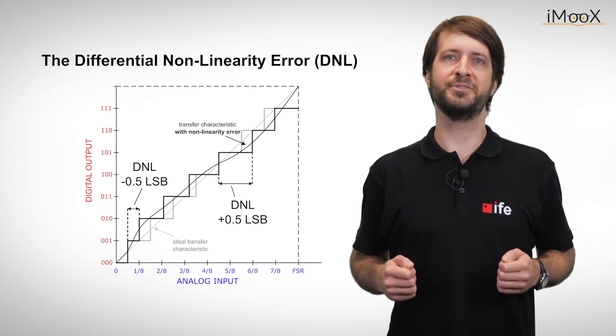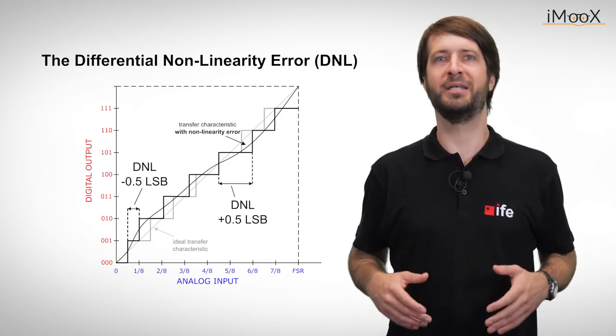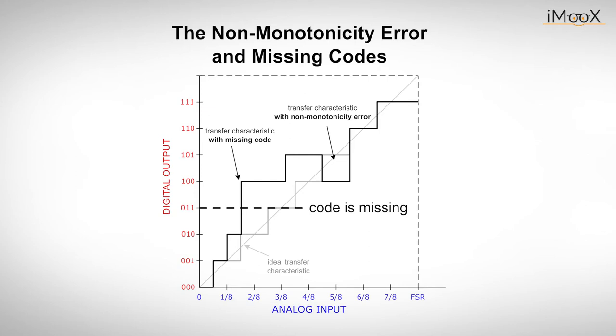In this case, we get another type of error that poses a great risk for the stability of control loops, the so-called non-monotonic error or missing codes. As you can see, in this case we do not get all digital output values for the entire analog input range. In the example shown, the digital code 011 is missing. The output of the ADC jumps instead from binary 010, that is the number 2, to 100, that is 4, without ever showing 3.